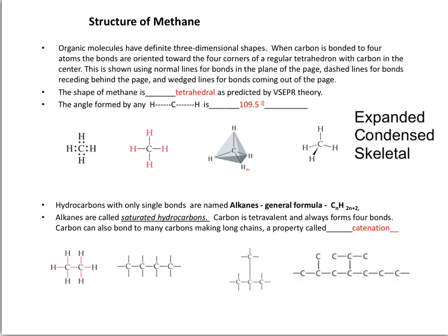But we also have the best representation for methane, which shows the shape of the molecule. Since it has four electron groups, according to the VSEPR theory,